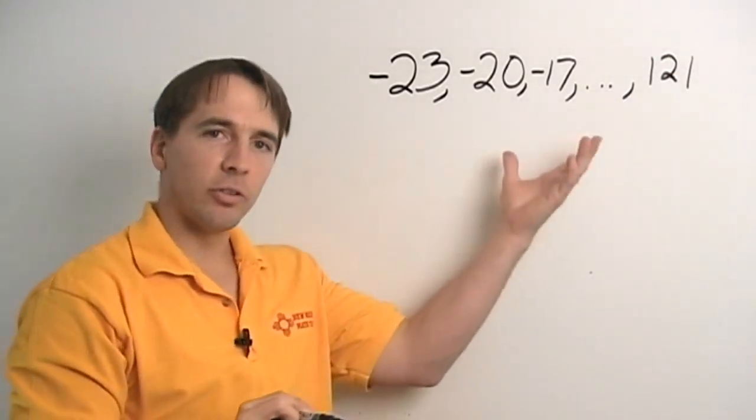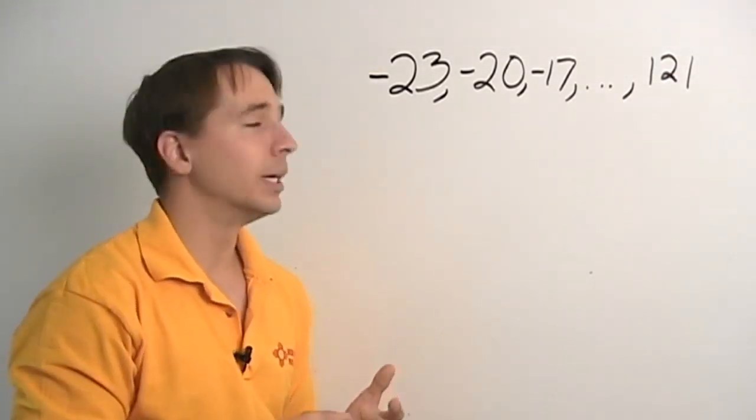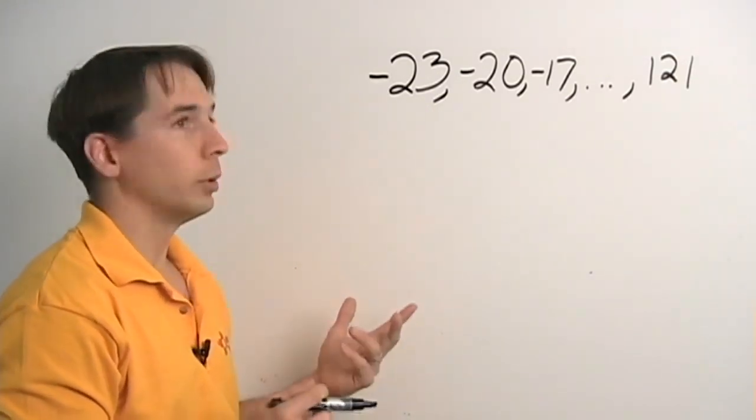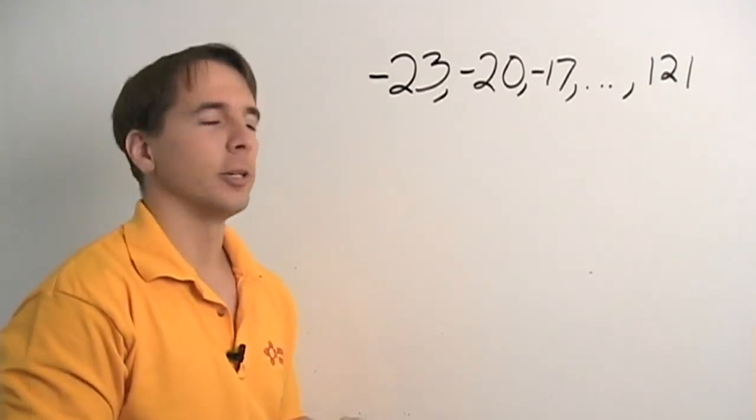All right. Now, we could just list them all out. List them all out and count them off 1, 2, 3. But, first of all, that doesn't look like much fun. It'll take a long time and we might make some mistakes. So, maybe we can find something smarter to do.